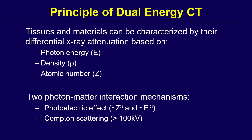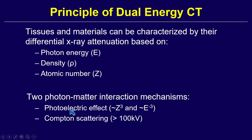So why is it working? That's just a brief touch on that. Tissues attenuate x-rays based on their photon energy — that is how we send the x-rays in — but then based on the atomic density and the atomic number. This is obviously different for many of our tissues. There are different determinants on how the attenuation occurs, and it's not linear. The mechanisms include the photoelectric effect and Compton scattering, which you may remember from physics.